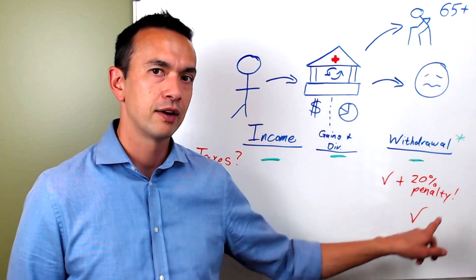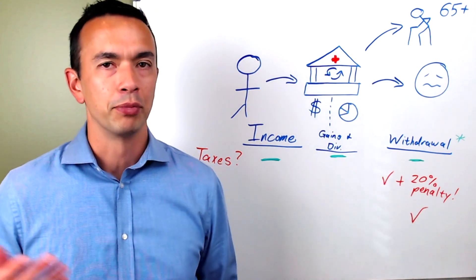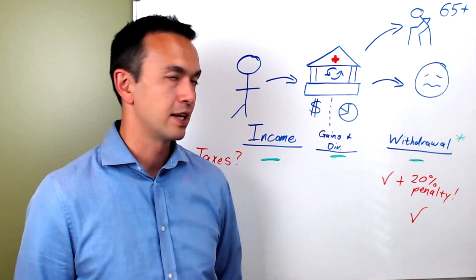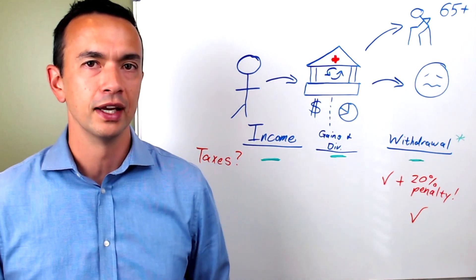But finally, as soon as you turn 65, then you can actually use money out of the HSA to go on a trip, buy a boat, and you will just get taxed on it just as if it was a traditional IRA.